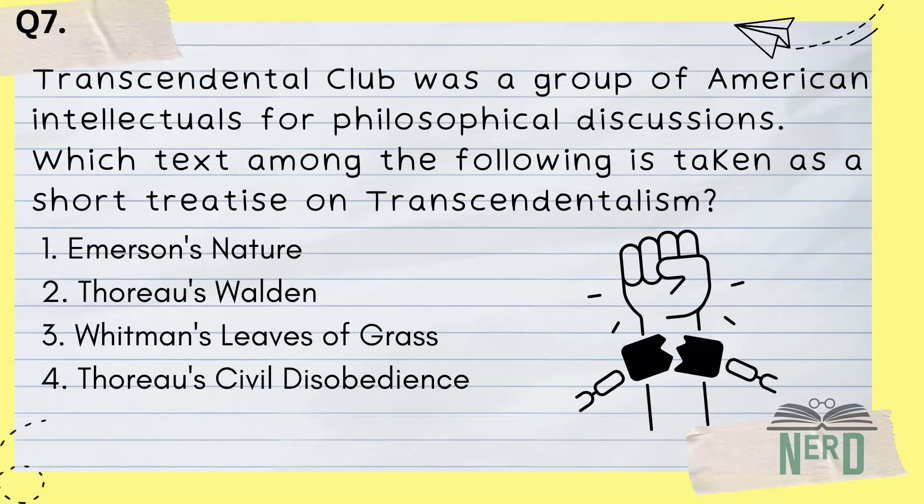Question 7. Which text is considered a short treatise on transcendentalism by the Transcendental Club? 1) Emerson's Nature, 2) Thoreau's Walden, 3) Whitman's Leaves of Grass, 4) Thoreau's Civil Disobedience. Answer: 1, Emerson's Nature.